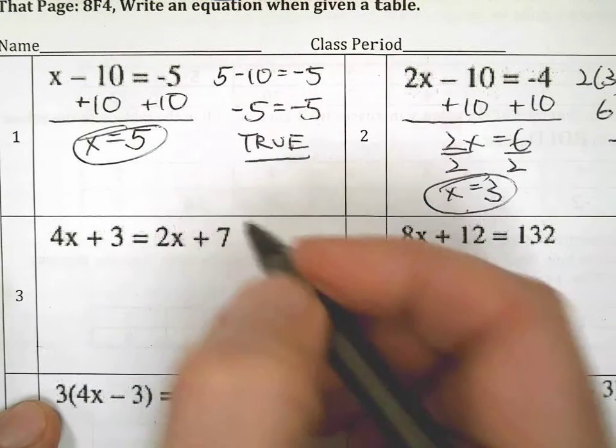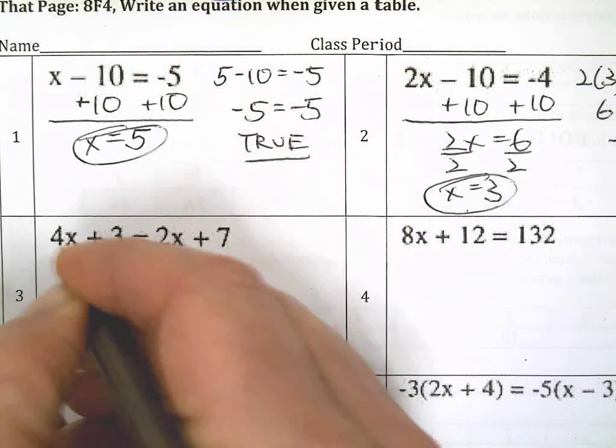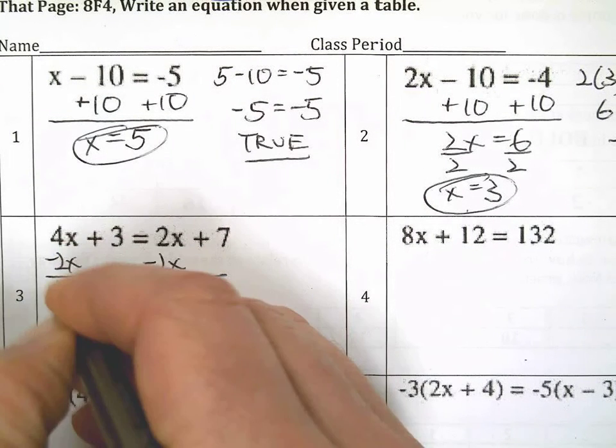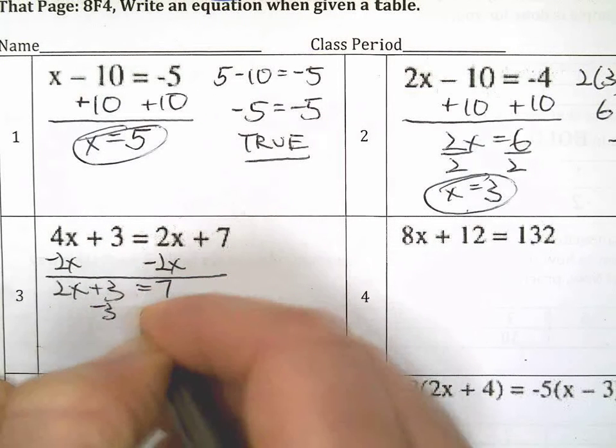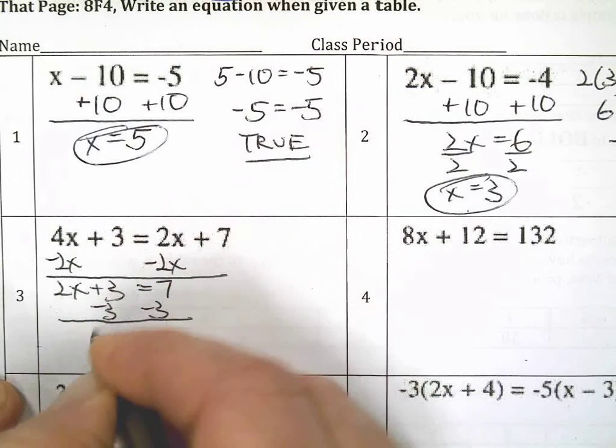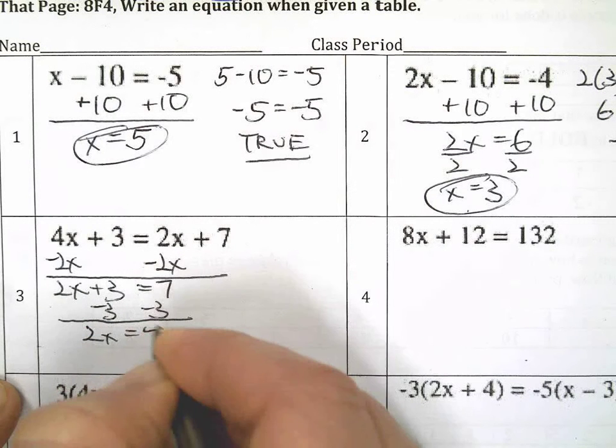If your proof is not true, you did something wrong. Go back and fix it. I'm going to take away 2x from both sides. Now I'm going to take away 3 from both sides. Then I'm going to divide by 2. I can see that one coming a mile away.